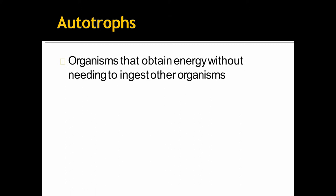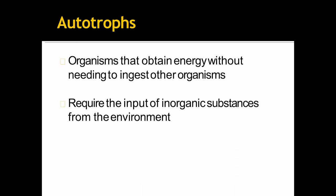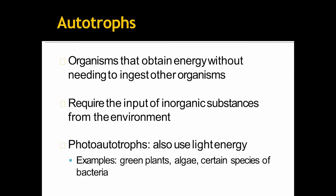Now what are autotrophs? Organisms that obtain energy without needing to ingest other organisms. They require the input of inorganic substances from the environment. Now what are photoautotrophs? They use light energy. For example, green plants, algae, certain species of bacteria.